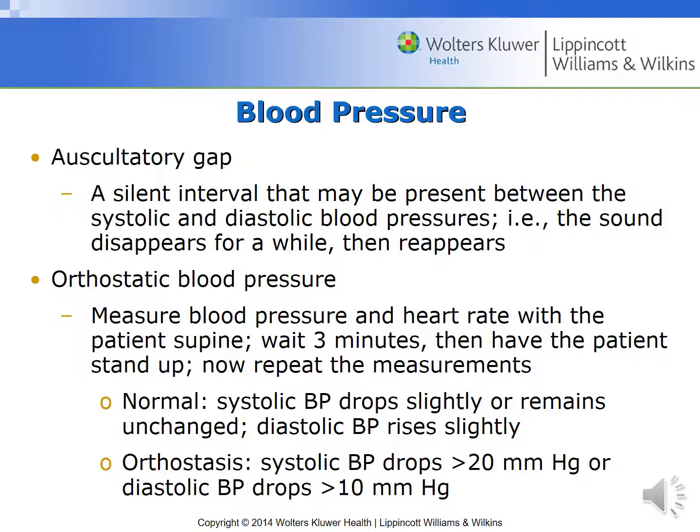If you're looking at orthostatic blood pressure, you're going to measure both blood pressure and heart rate together. Have the patient lay supine for about five minutes, take the blood pressure and heart rate, wait three minutes, then have the patient stand up and repeat the measurement. A normal orthostatic blood pressure will drop slightly or remain unchanged, whereas the diastolic blood pressure might rise slightly — that's considered normal. However, if the systolic drops more than 20 points or the diastolic drops more than 10 points, then you have orthostasis. Another approach is supine, sitting, then standing, but the two main positions are supine and standing with time in between to allow normalization.